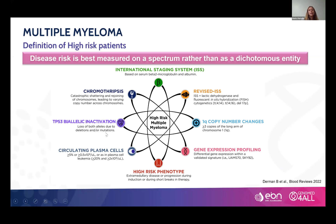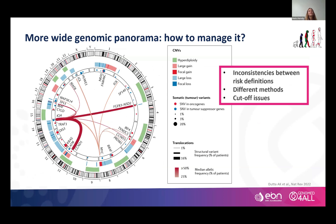Indeed, we can also consider circulating plasma cells, gene expression profiles, and so on. So what we know so far about multiple myeloma is that current risk stratifications are suboptimal. Regarding the genomic panorama, it is very challenging to define which are the high-risk features and the co-segregation of different features, since they are currently studied by FISH and new methods have only very recently been included.